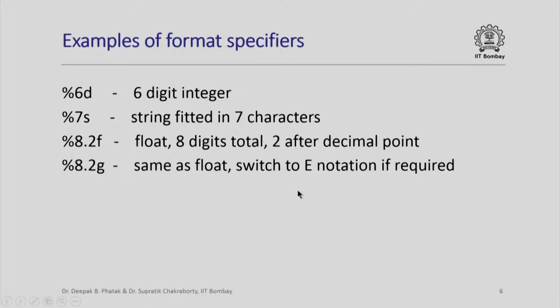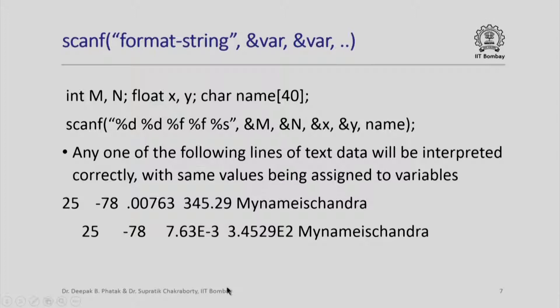Here is an example of scanf. scanf does the opposite conversion — it uses the format string to interpret values given on input and converts each of these values to the corresponding internal format. For example, I have m and n as integer variables, x and y as floating point variables, and a string name as a character array. Notice I have written &m, &n, &x, and &y. The reason is that scanf is trying to get values inserted into these variables, so I must pass these variables by pointer reference; otherwise these variables will not change when they come back from the function.